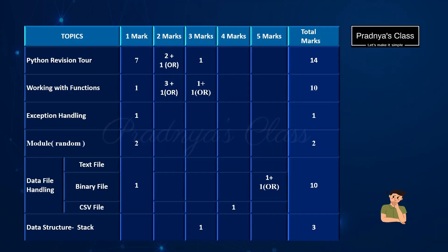Here on the screen you can see the distribution of the marks based on the topics. If we talk about the first two chapters, that is Python Revision Tour 1 and 2, there are total 7 one-mark questions. Along with that, there are total 3 two-marks questions. Moreover, there will be one question which will be having an OR option. There is also one question for 3 marks. So the total weightage of this chapter is 14 marks. Pay attention to these two chapters because it contains higher weightage.